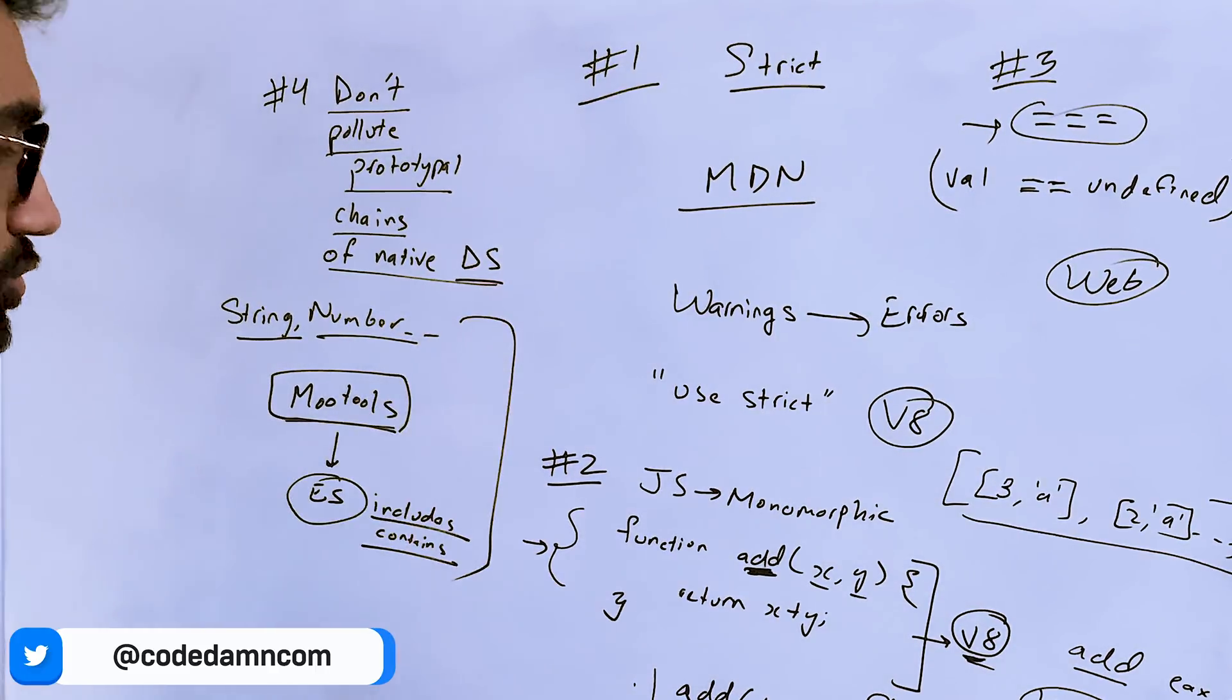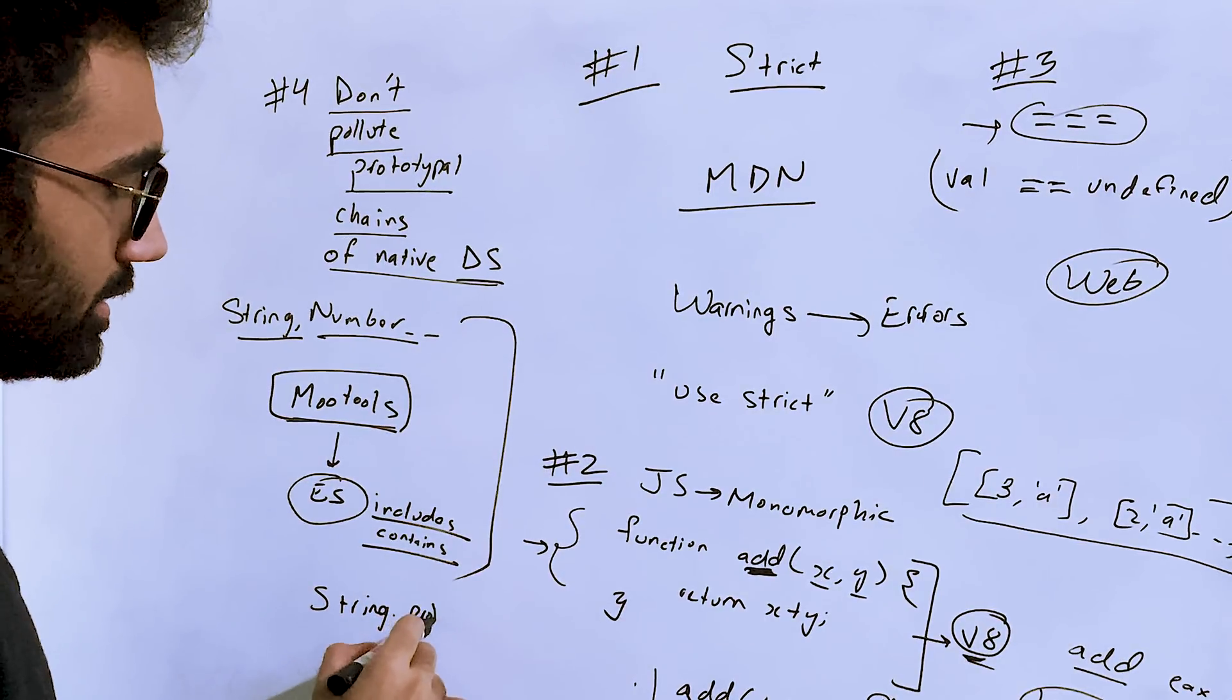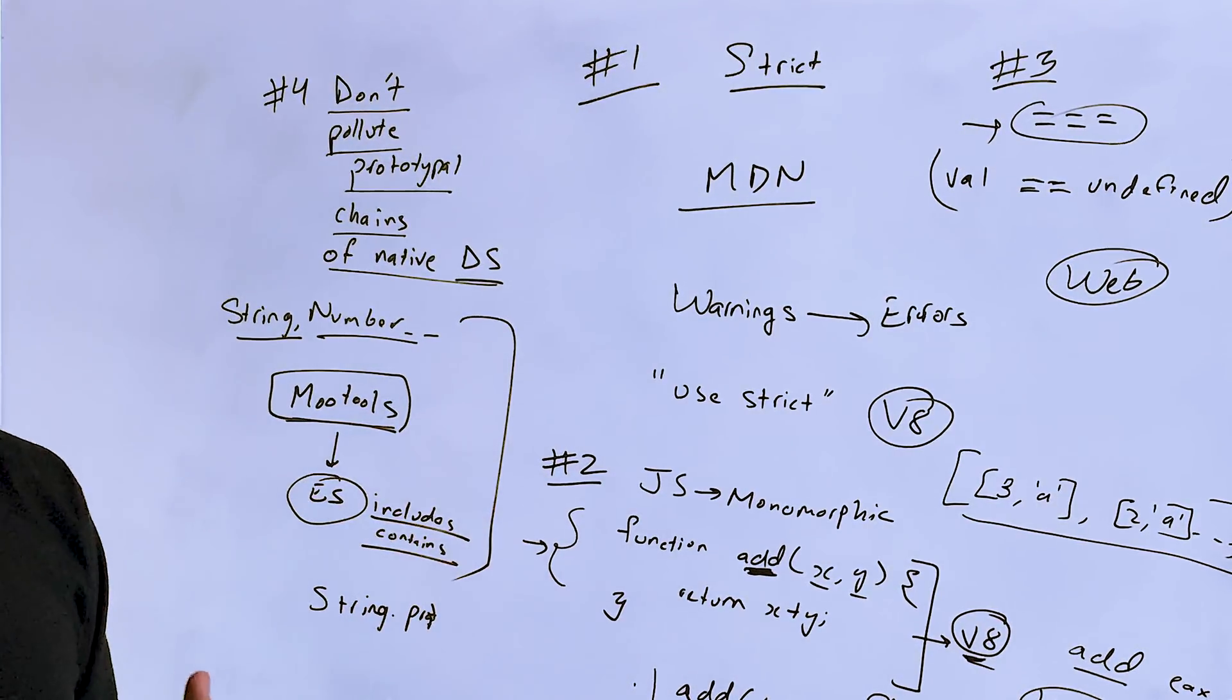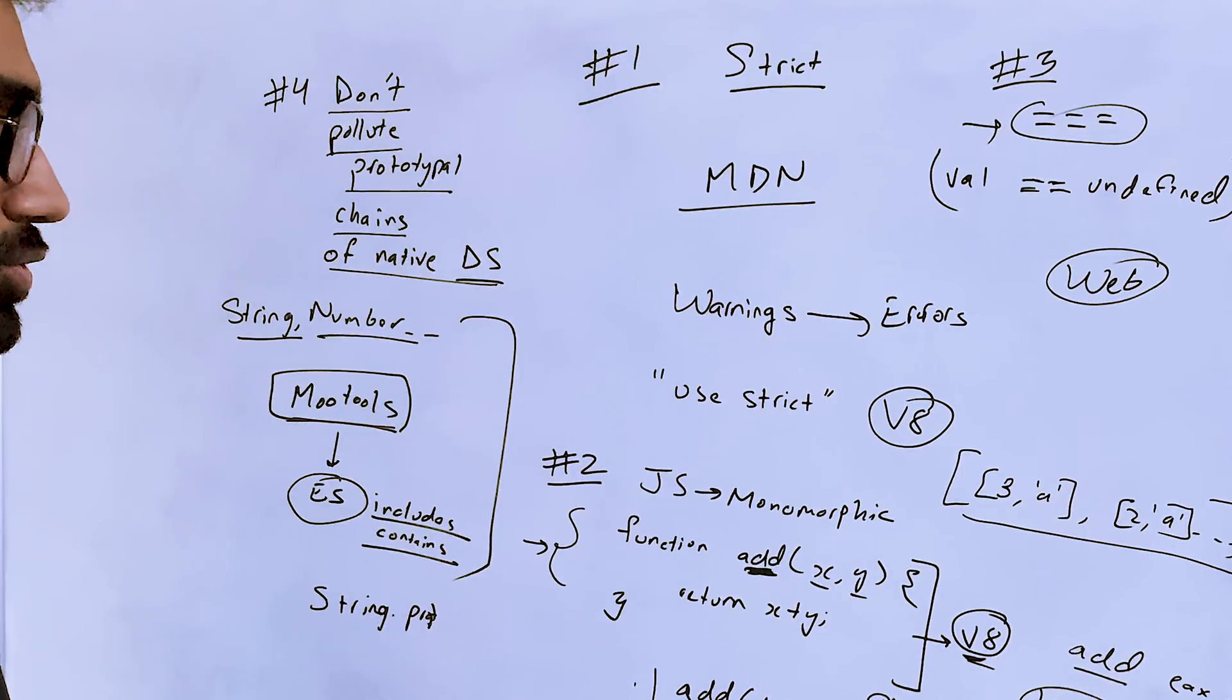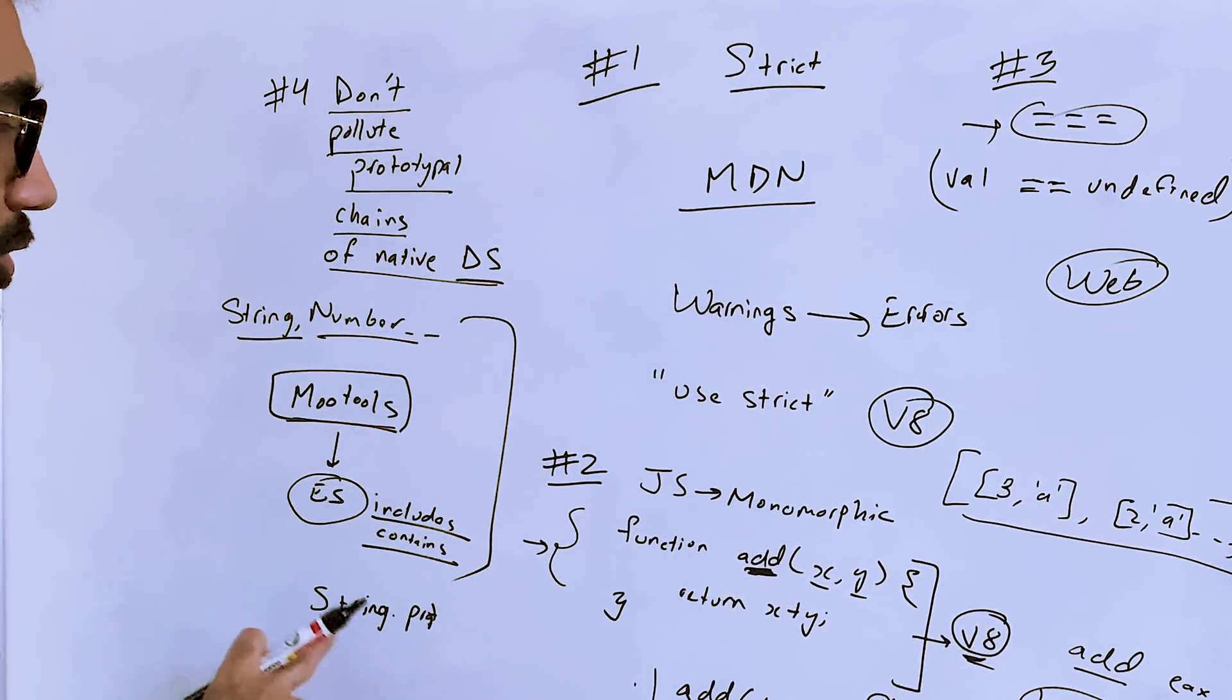That is the prototypal chain. So don't use libraries like MooTools or don't use features which actually require you to directly add to String.prototype.something, because there are always better ways, better methods, better techniques to use. Don't use these libraries and practices yourself because you'll probably be contributing to a web where the web is rigid and it cannot grow.